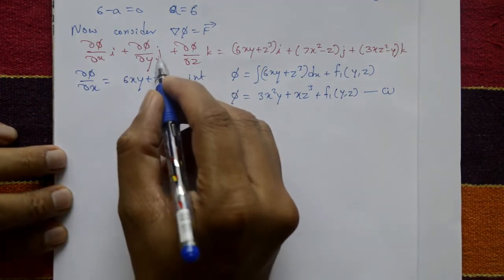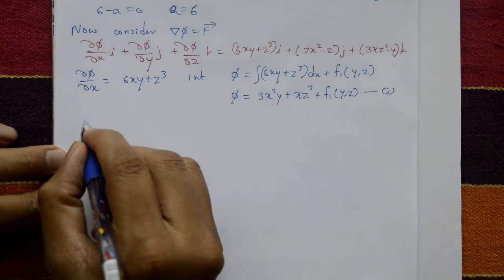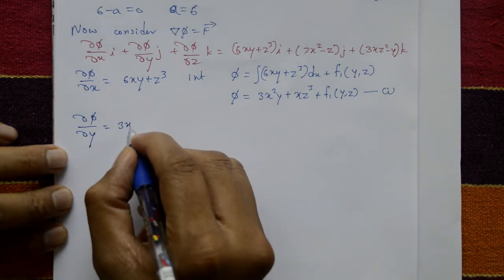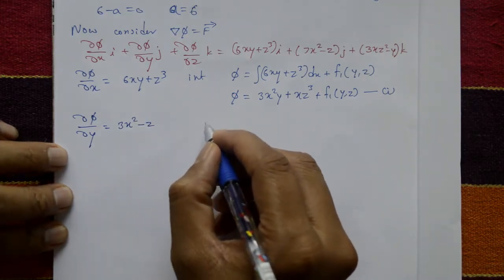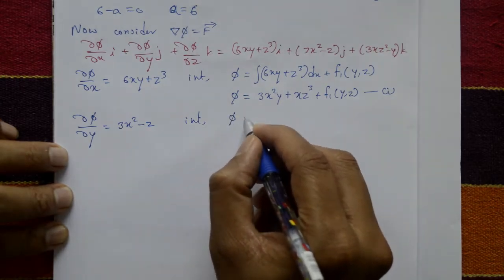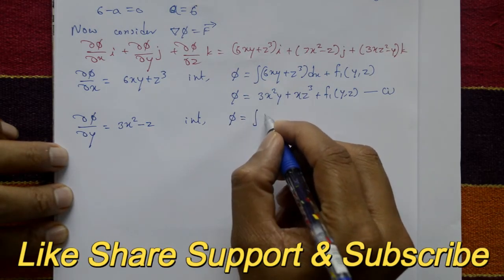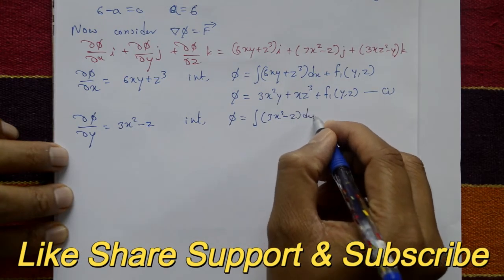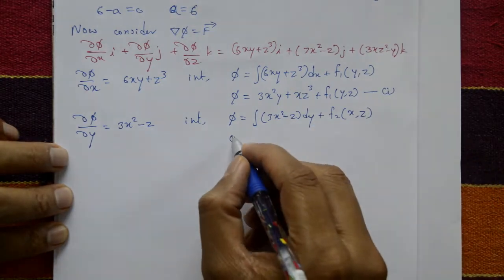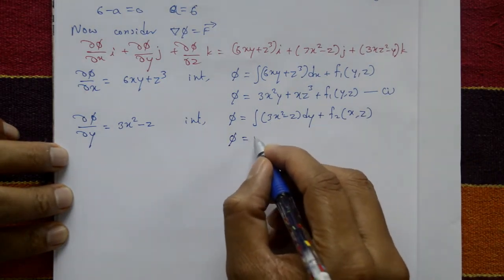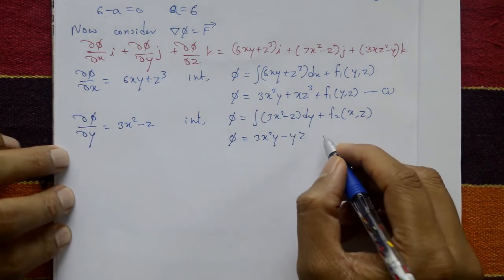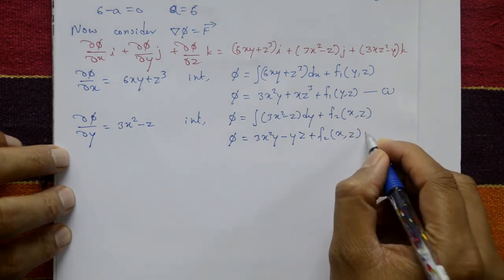From the coefficient of j: ∂φ/∂y = 3x² - z. Integrating both sides with respect to y, φ = 3x²y - yz + f₂(x, z), where f₂(x, z) is an arbitrary function. This is equation number two.